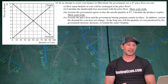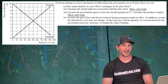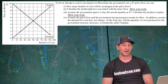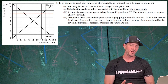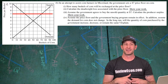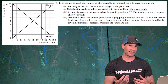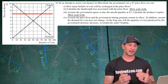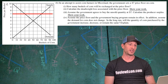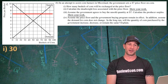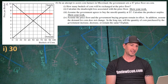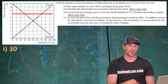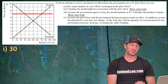Part B: in an attempt to assist corn farmers, the government sets a $7 price floor on corn. How many bushels will be exchanged at the price floor? The quantity exchanged is always the lower of the two quantities. At $7, quantity supplied is 70 but quantity demanded is only 30. Since buyers won't purchase more than they demand, the quantity exchanged is 30 units.